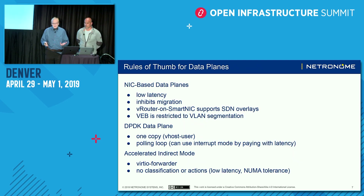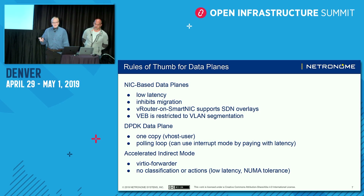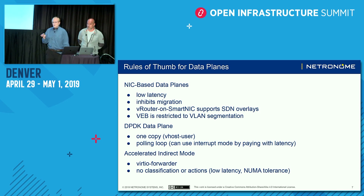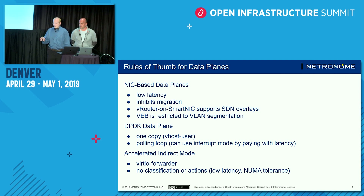So how do you choose which data plane to deploy? You should pick a NIC-based data plane if you require low latency and do not necessarily care about live migration. You can pick a VEB if VLAN segmentation is enough for you. Vrouter on smart NIC is good if you want the full SDN offloads with overlay, connection tracking, and security policies. Or you can pick a DPDK data plane if you're happy with low-latency performance and can spare the CPU cores, or if you can tolerate added latency by switching to interrupt mode.